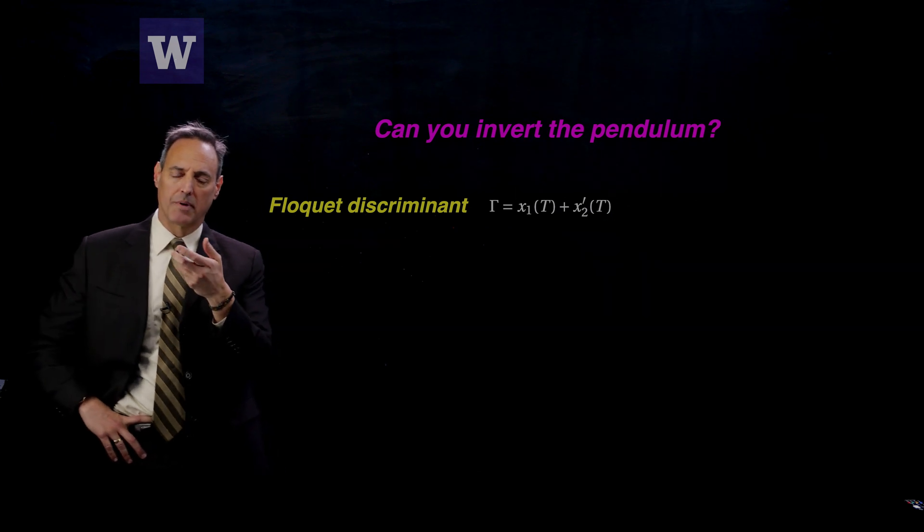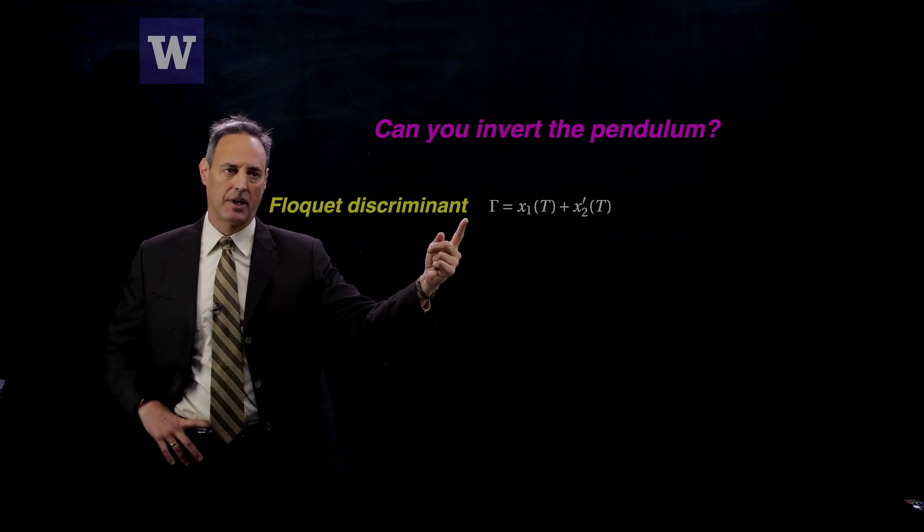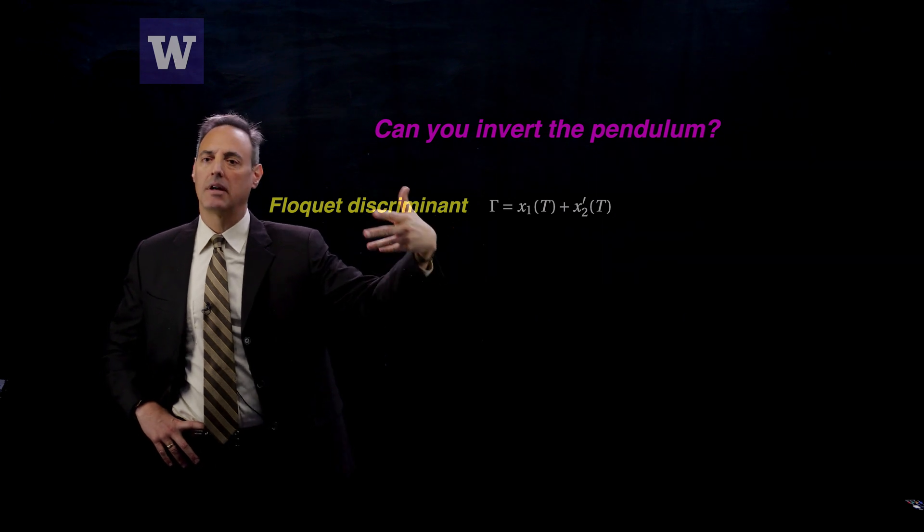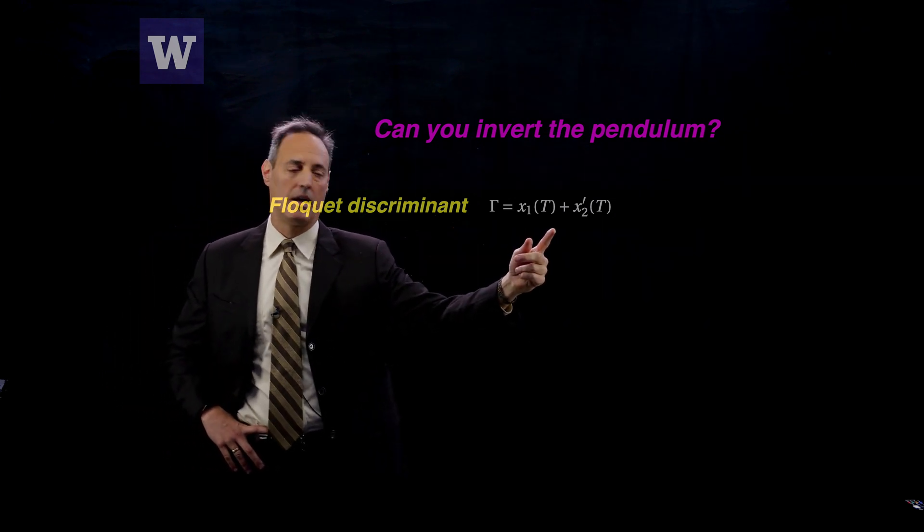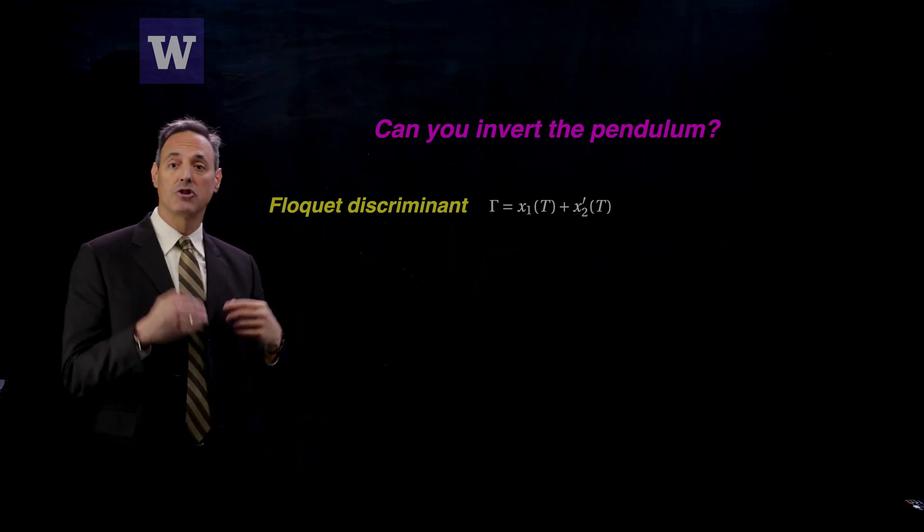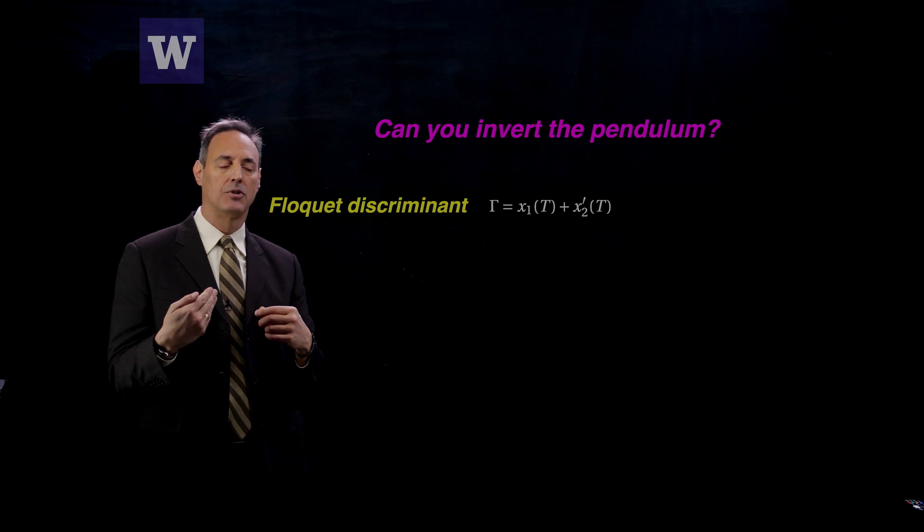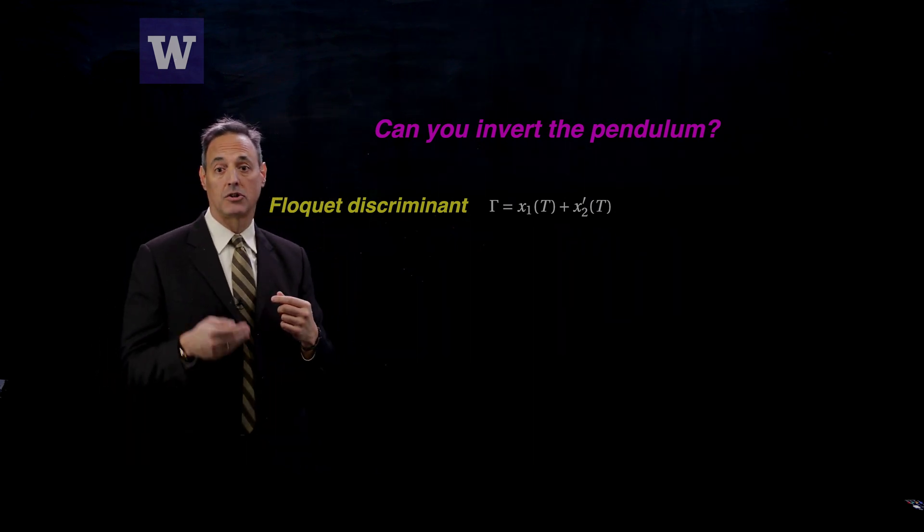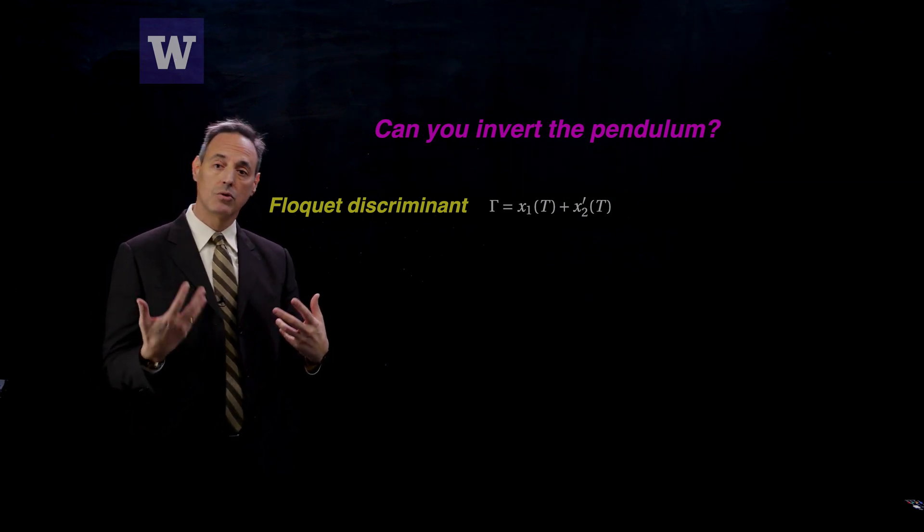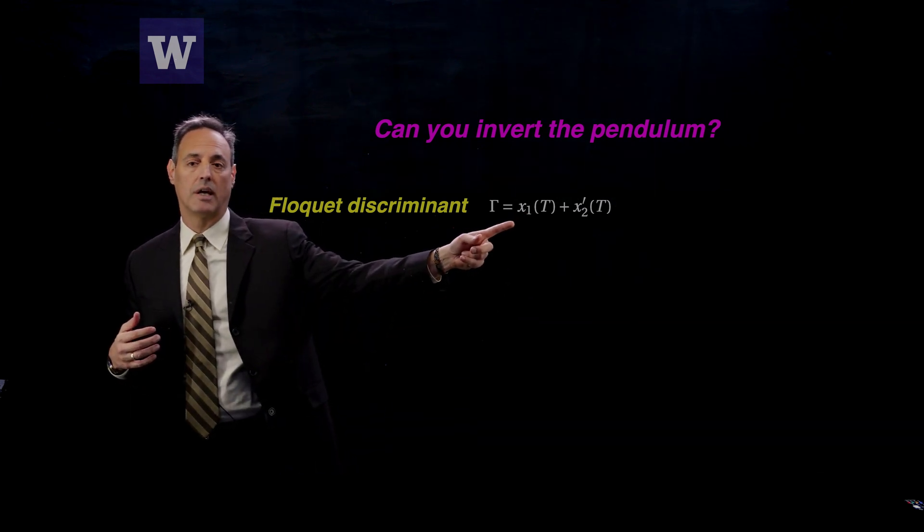So remember for the Floquet discriminant, what I have to compute, this is from the last lecture, is this quantity here, gamma, this Floquet discriminant, is equal to the first fundamental solution evaluated at t, the second fundamental solution, its derivative evaluated at t. And remember x1 satisfies the initial condition that it is 1, its value is 1 and its derivative is 0 at time 0, and x2 satisfy that the solution is 0 and its derivative is 1 at time t equals 0. So I've got to find these solutions with these two different initial conditions, and once I find x1 and x2 I could construct this Floquet discriminant for this problem.